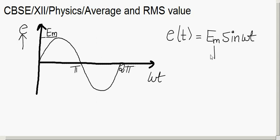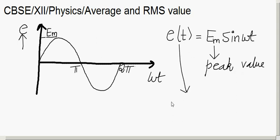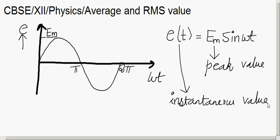What is E-m here? It is the peak value. What is E(t)? It is the instantaneous value — the value of this voltage at any time t. For example, at t1, t2, t3, etc. It is the value of the voltage or current at any instant.